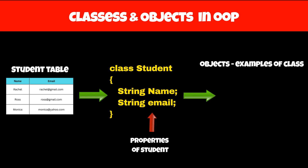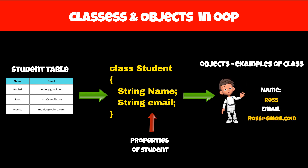Objects in OOP are instances or examples of these classes which have actual values of those variables. For example, we can have one object for student Ross, which will have name as 'Ross' and email as 'ross@gmail.com'.